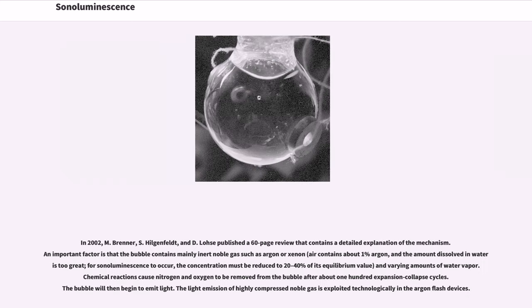In 2002, M. Brenner, S. Hilgenfeldt, and D. Lohse published a 60-page review that contains a detailed explanation of the mechanism. An important factor is that the bubble contains mainly inert noble gas such as argon or xenon and varying amounts of water vapor. Chemical reactions cause nitrogen and oxygen to be removed from the bubble after about 100 expansion-collapse cycles. The bubble will then begin to emit light.